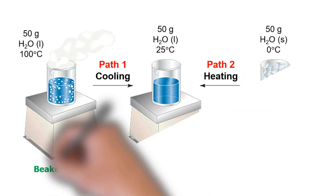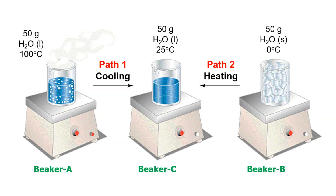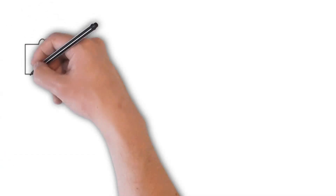The second example of a state quantity we are going to discuss is temperature. In this example, there are two paths. Path one involves the cooling of boiling water from 100 degrees Celsius to room temperature at 25 degrees Celsius, whereas path two involves the melting of ice cubes and raising the resulting water temperature to 25 degrees Celsius. The processes in both paths differ — cooling in path one, melting in path two. However, the final temperature of the water in beaker C is the same and is independent of the paths. Therefore, temperature is a path-independent quantity, or a state quantity.